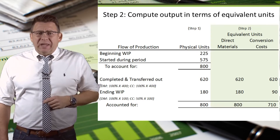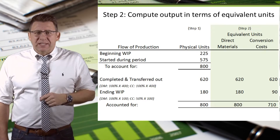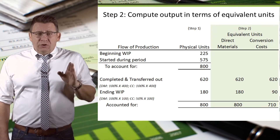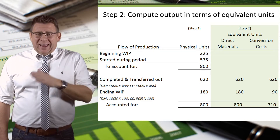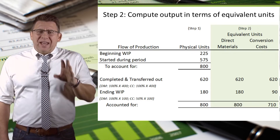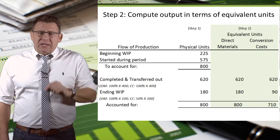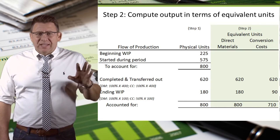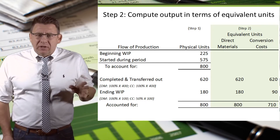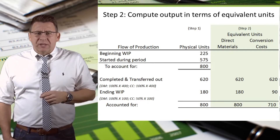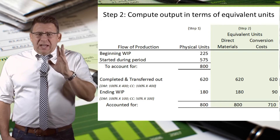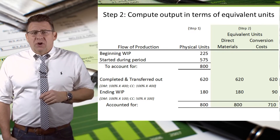Step 2 is converting the partially completed units into fully completed equivalent units. We do this for both direct materials and conversion costs. Often, but not always, materials are added at the beginning of a process, whereas conversion costs tend to happen evenly throughout the process. In this example, let's assume that direct materials have been added at the beginning, and the ending WIP is 50% complete for conversion costs.